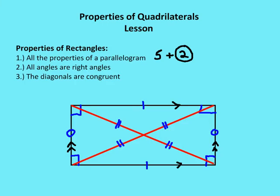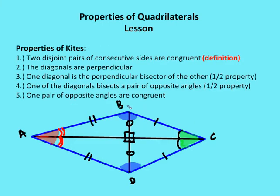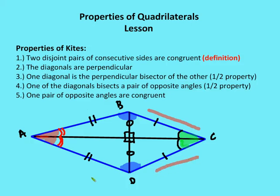Moving on to kites — we're going to talk about kites before rhombuses, and I'll show you why in a second. In a kite, I have two disjoint pairs of consecutive sides that are congruent: AB and AD are congruent, and BC and DC are congruent. The diagonals are perpendicular — AC is perpendicular to BD. One diagonal is a perpendicular bisector of the other: AC is a perpendicular bisector of BD because both C and A are equidistant from the endpoints of BD.